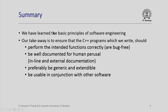In summary, we have learned basic principles of software engineering. As far as we are concerned, as part of the C++ programming course, our takeaway is to minimally ensure that the C++ programs we write should: (a) perform the intended functions correctly — the programs are bug free or error free; (b) be well documented for human perusal, including documentation both accompanying the program and in-line documentation written using commands permitted in C++. Additionally, it would be preferable if we write C++ programs which are generic, extendable, and usable in conjunction with other software as well.